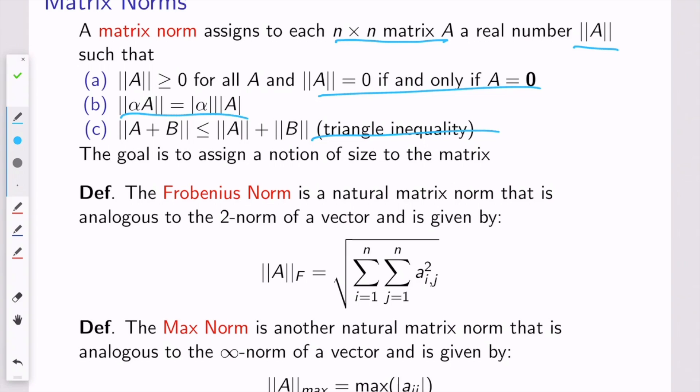There's one called the Frobenius norm, and it's similar to the two norm of a vector. You take all of the entries in the matrix, and you square them, you add them up, and then you take the square root. That's called the Frobenius norm.